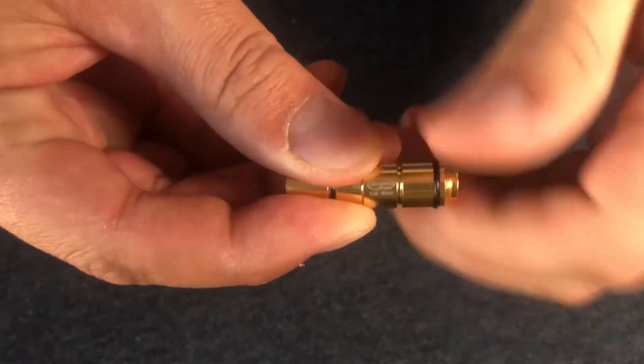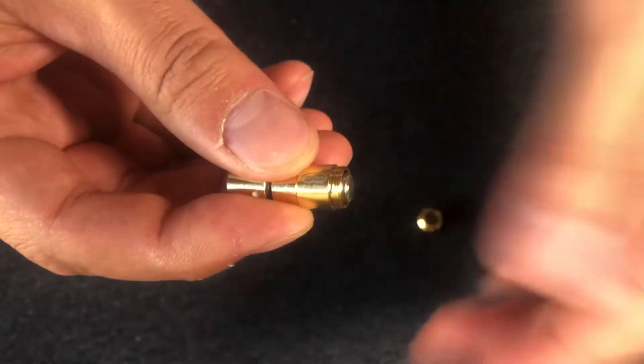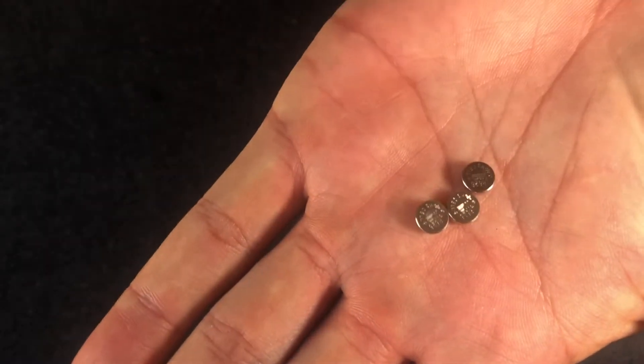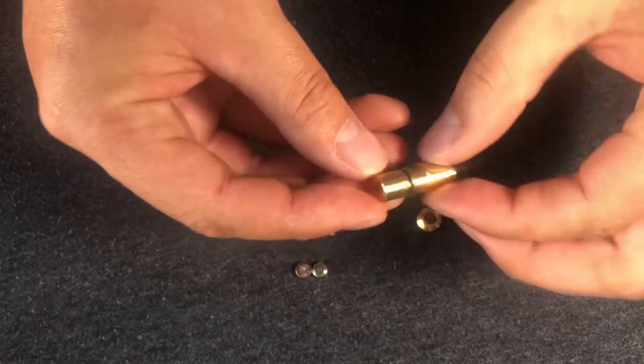Then, unscrew the back end with the firing pin pressure pad and remove the three LR626 batteries. You have now disassembled your laser cartridge.